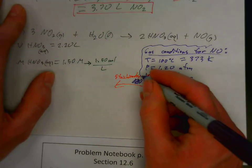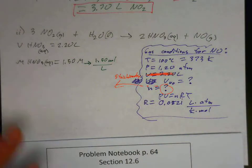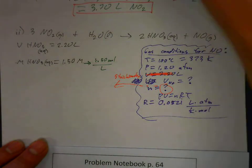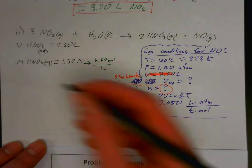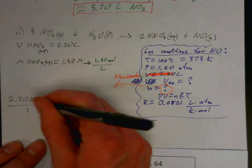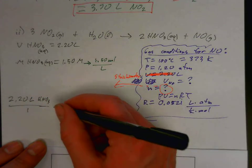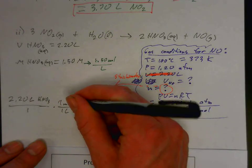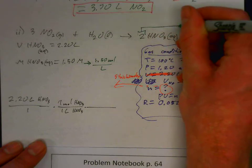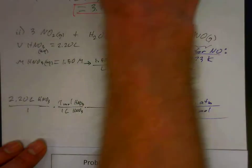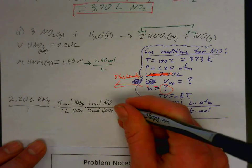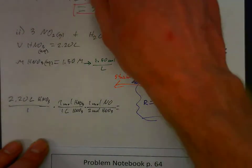Starting with 2.20 liters of HNO₃ and using molarity — 1.50 moles HNO₃ per 1 liter — we then apply the mole ratio from the equation coefficients: for every 2 moles of HNO₃ we get 1 mole of NO. Solving this gives us 1.65 moles of NO. That is the N value we need for the ideal gas law.